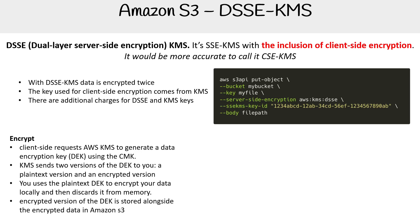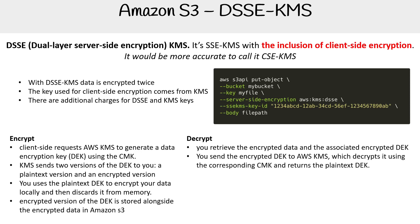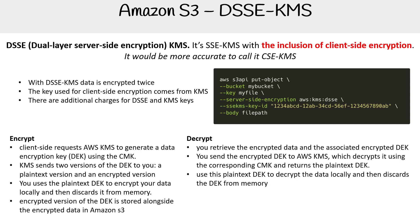For decryption, you retrieve the encrypted data and the associated encrypted DEK. You send the encrypted DEK to AWS KMS, which decrypts it using the corresponding customer managed key (CMK) and returns the plain text DEK. Then you use the plain text DEK to decrypt the data locally, and then discard the DEK from memory.